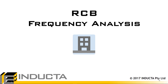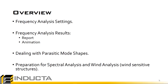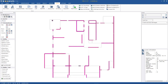In this video we're going to talk about frequency analysis in RCB. We're going to look at the settings, how to review the frequency analysis results including the animation and the report. We'll learn what parasitic mode shapes are and how to deal with them, and we'll look at frequency analysis in preparation for spectral analysis and wind analysis for wind sensitive structures. We're going to run a frequency analysis on the model that we've been working on in the previous videos.